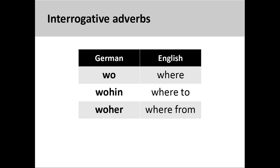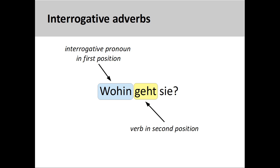You will recall that interrogative adverbs ask questions about the location of an activity or its direction. For example, in the sentence here, wohin geht sie? Where is she going to? The interrogative adverb wohin inquires about the direction of the subject of the sentence.